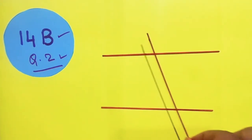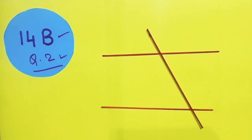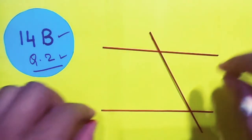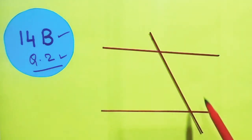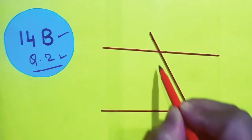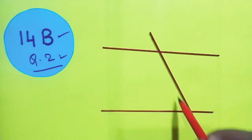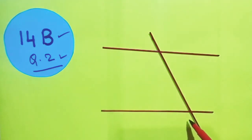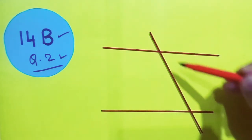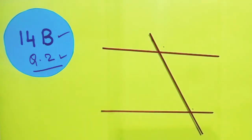This line is known as the transversal. Here the lines are parallel. Therefore, you can easily say that these two are interior alternate, these two angles are exterior alternate, this angle and this angle are co-interior or allied angles, while these two are corresponding angles.